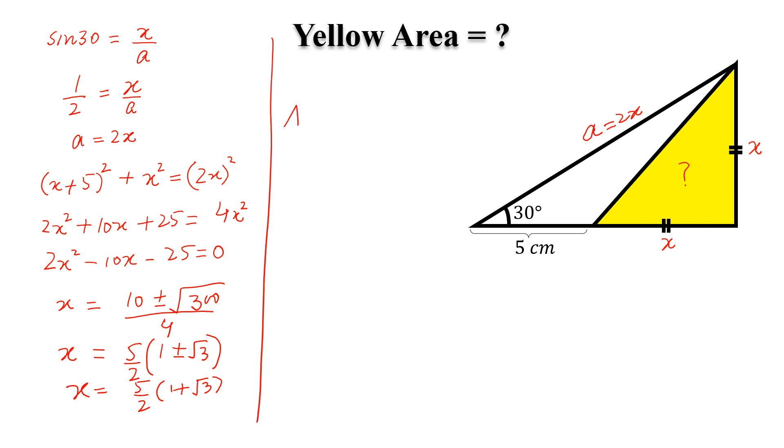Now, the required area, yellow area, will be equal to x² divided by 2, and x is equal to this.